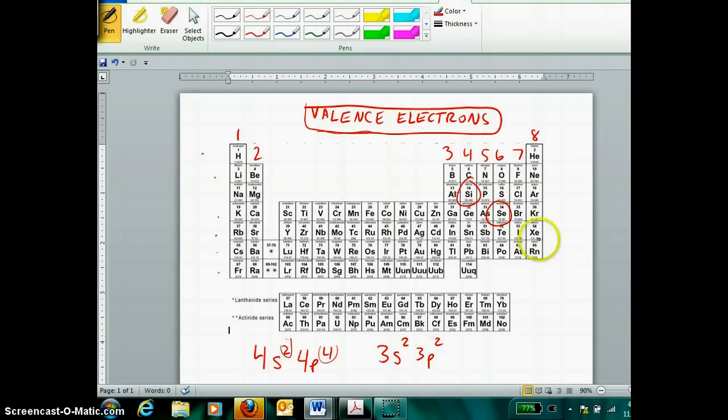If we wanted to know radon's valence configuration, easy. It's in period 6, so its valence level is 6. And it has, because it's in group 8, 8 valence electrons. So not only does it fill the S-sublevel with 2, it has 6 left over for the p-sublevel as well.